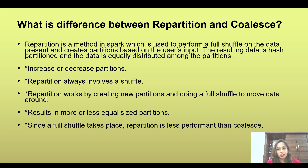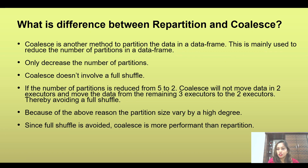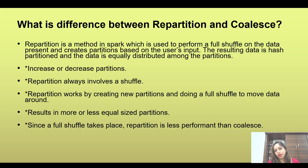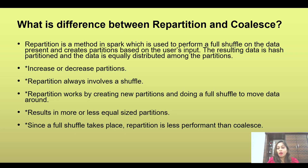Spark is completely partition-based. When you talk about repartition, you can both increase and decrease the number of partitions. Let's say you have five partitions and you want to repartition it to three. What happens is all your partitions will involve a complete shuffle, because all three partitions will be recreated from scratch.